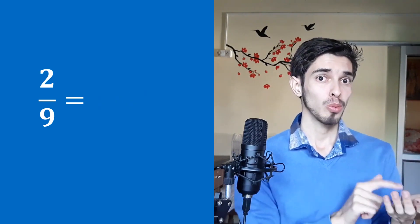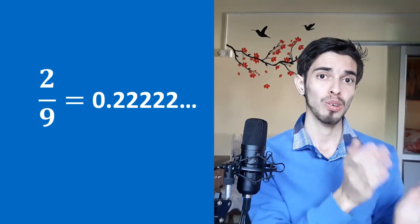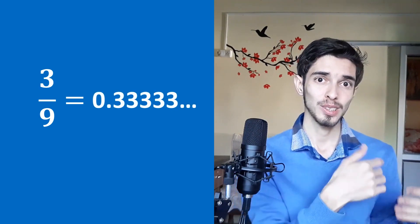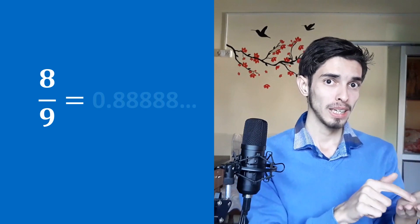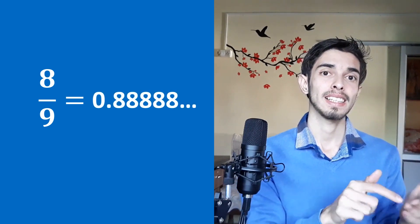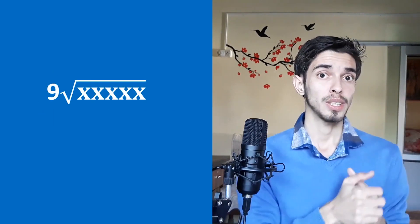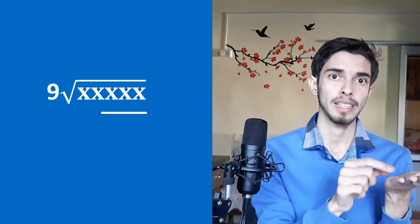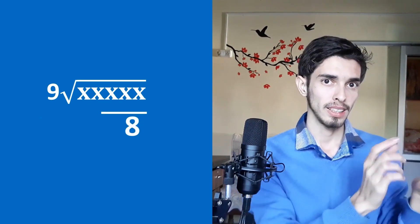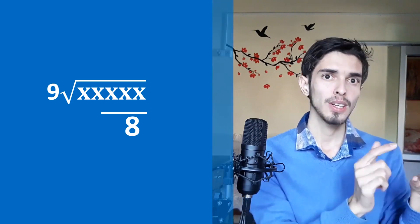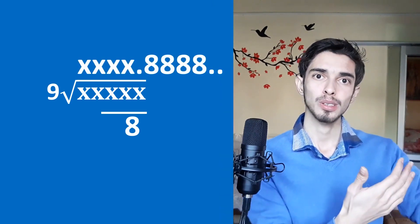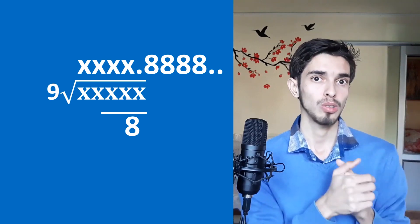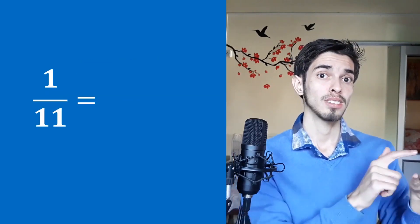Here is a really cool pattern: 1/9 is simply 0.111111 repeating; 2/9 is 0.222222 repeating; 3/9 is 0.3333 repeating — and so on all the way to 8/9, which is 0.88888 repeating. So when dividing by 9 and you get a remainder of, say, 8, you immediately know the answer continues as 0.88888 repeating. This will make you look like a superhuman calculator.